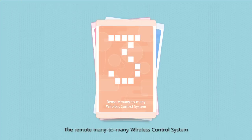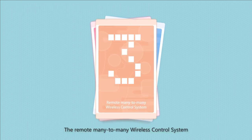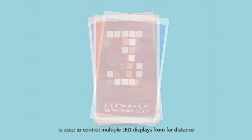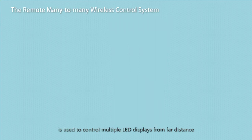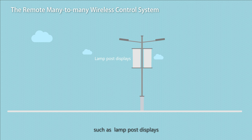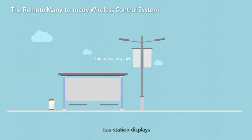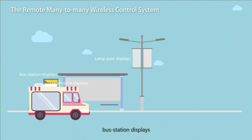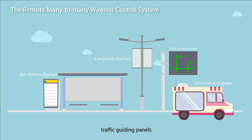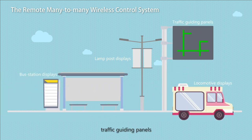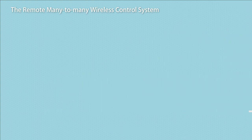The Remote Many-to-Many Wireless Control System is used to control multiple LED displays from far distance, such as lamppost displays, bus station displays, locomotive displays, and traffic guiding panels.